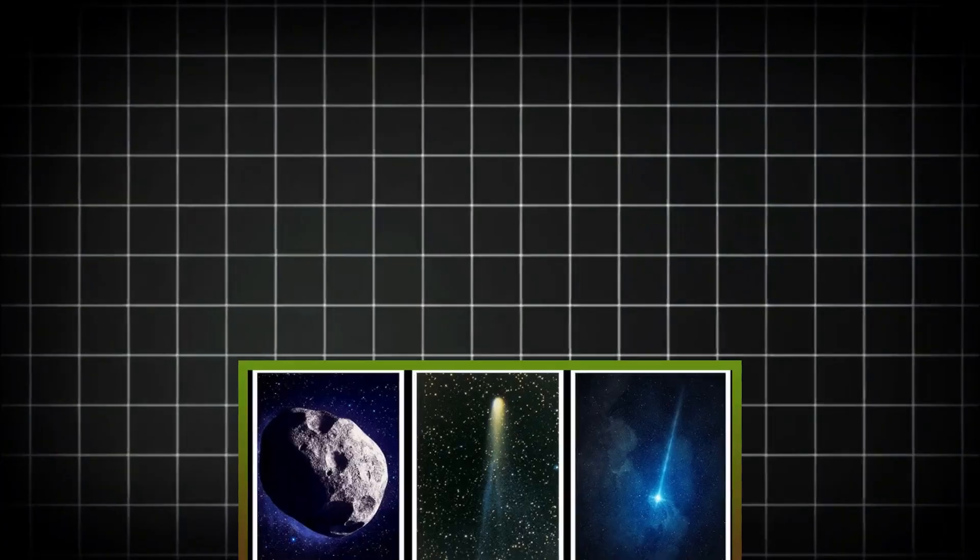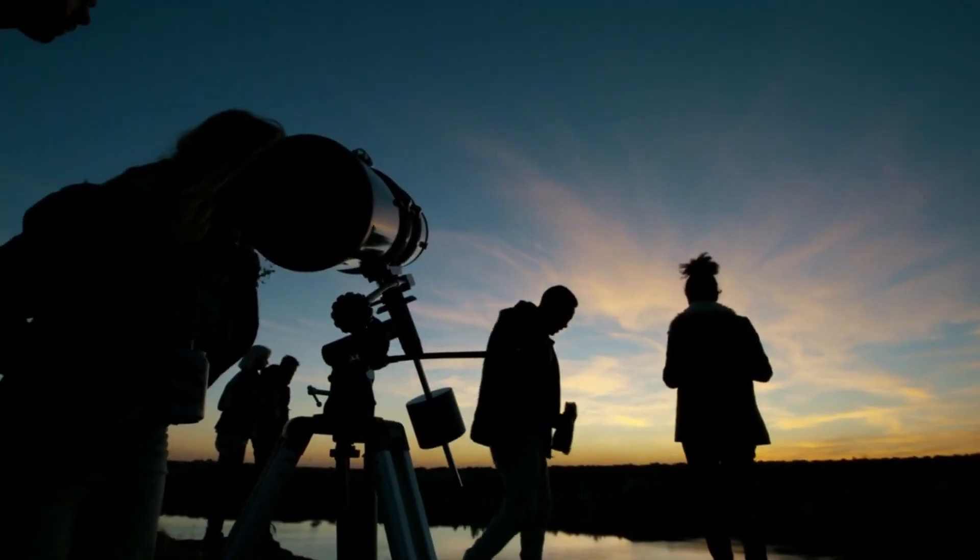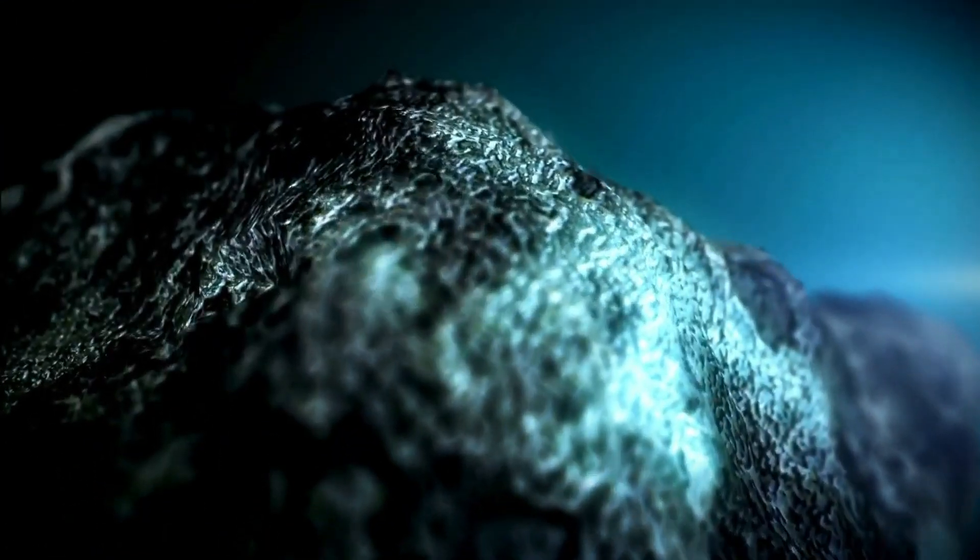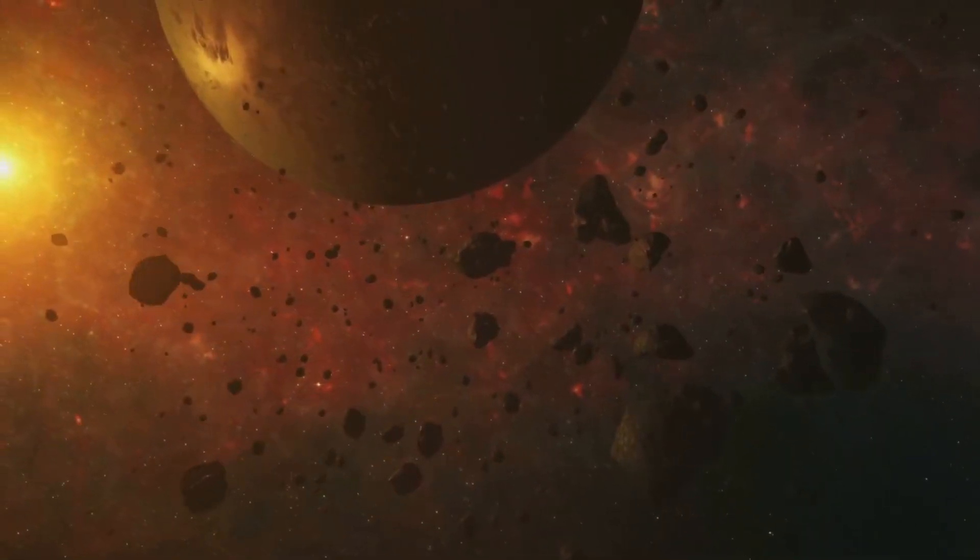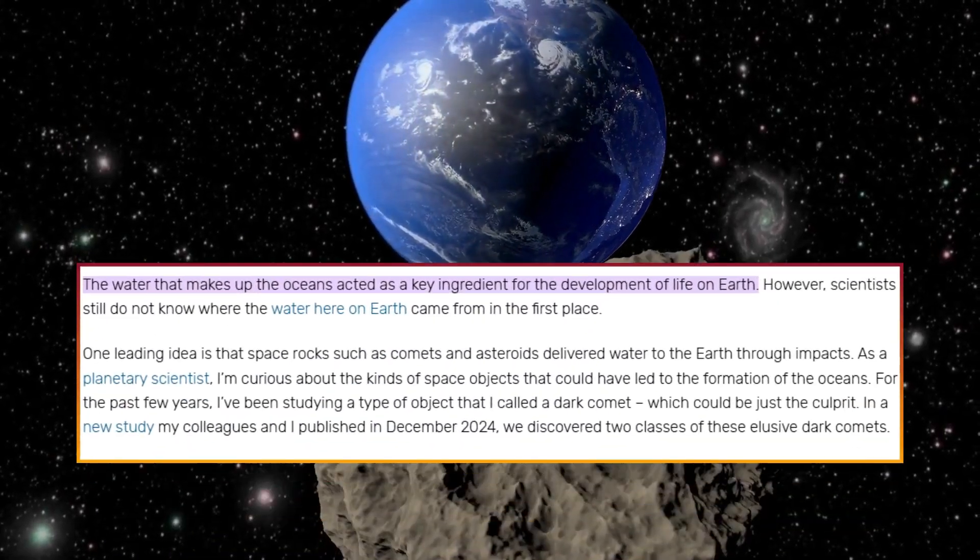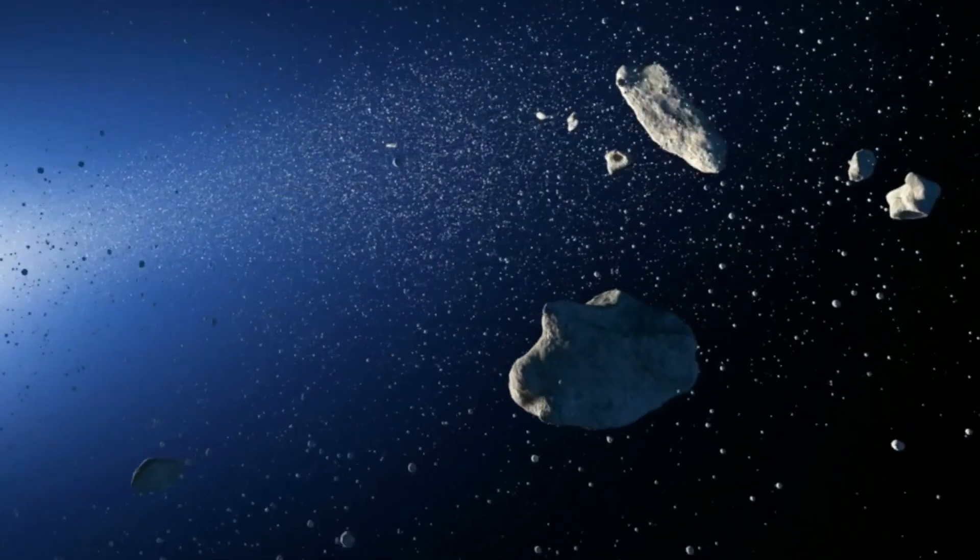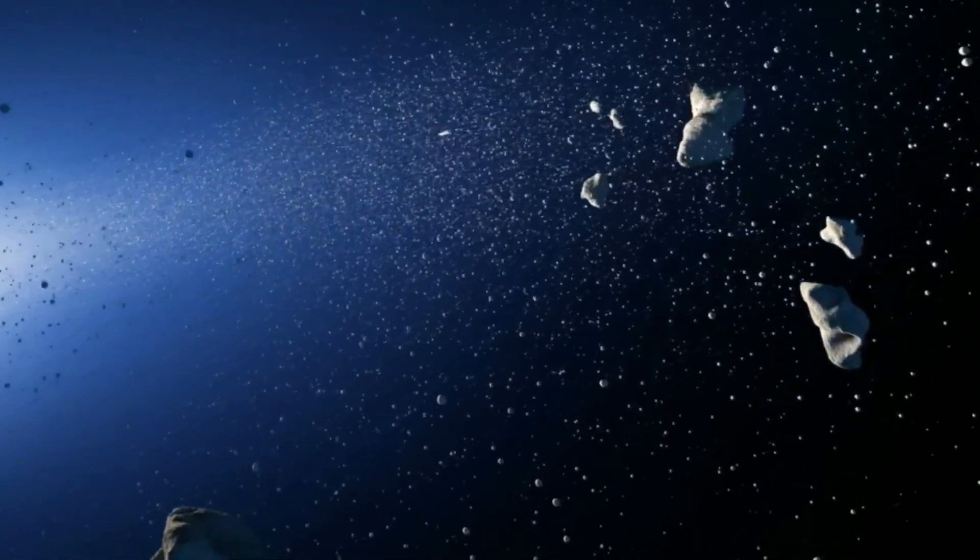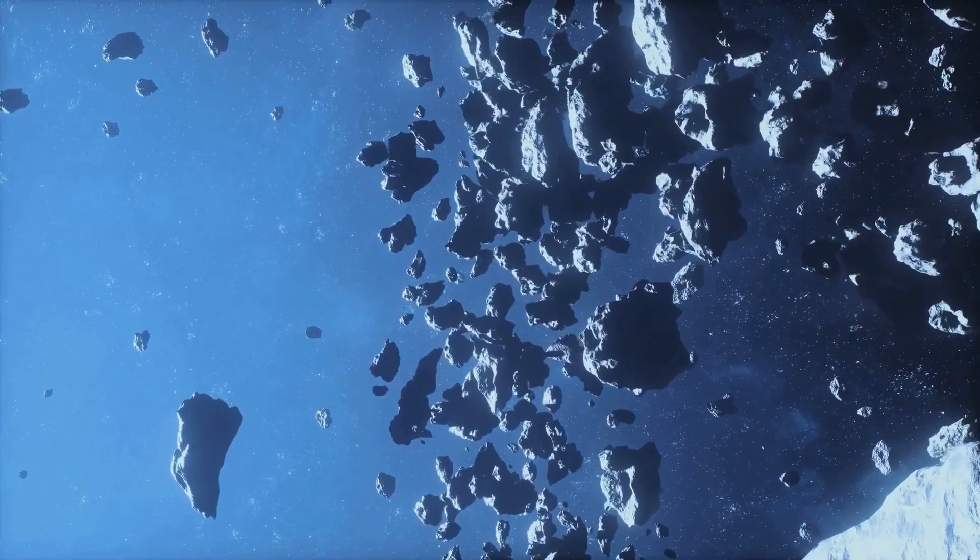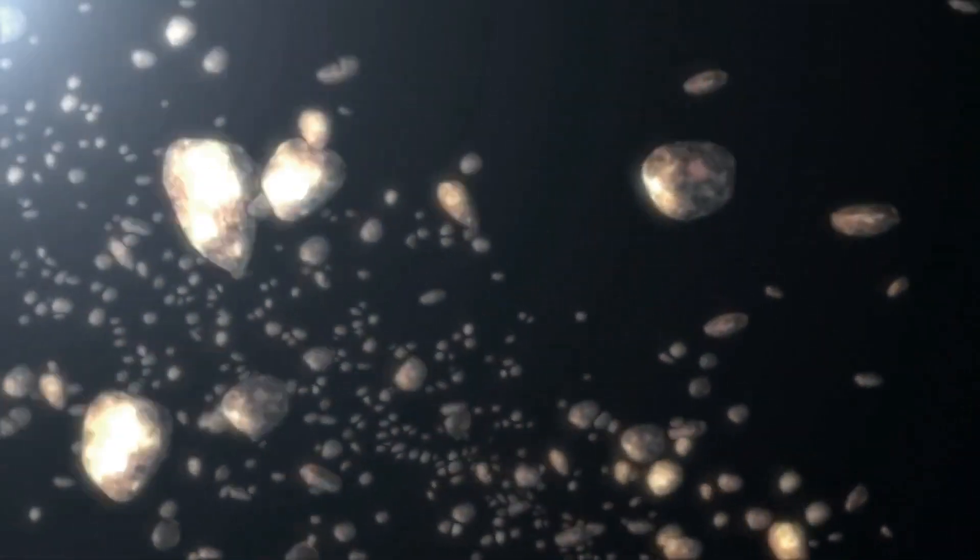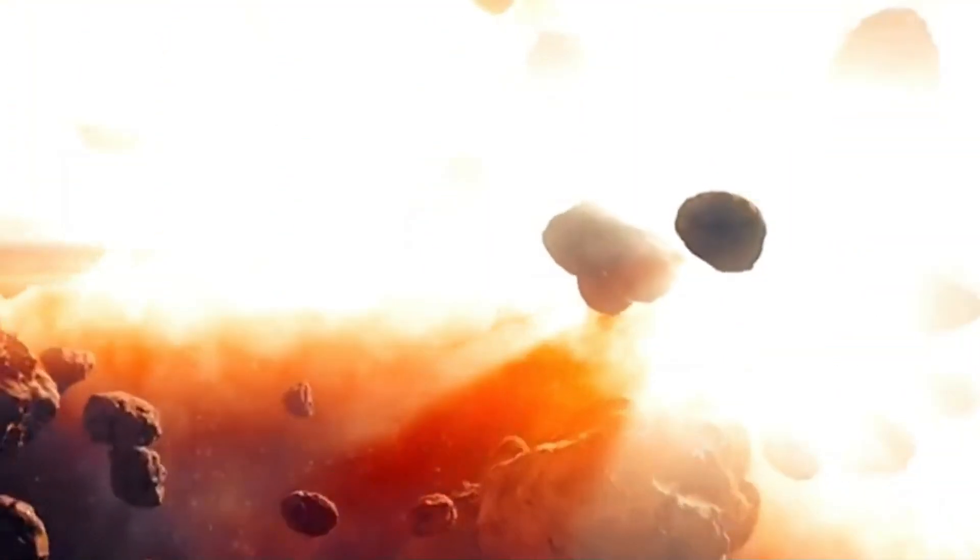This object also displayed strange acceleration, and its motion couldn't be explained by gravity alone. Some scientists hypothesize that Oumuamua could be a probe from an alien civilization due to its bizarre behavior, but this was quickly debunked. It turns out that Oumuamua was likely just a very strange object, a comet or asteroid behaving unpredictably as it passed through our solar system. Dark comets exhibit similar behaviors, and understanding them better could reveal just how common these mysterious accelerations are in our solar system.